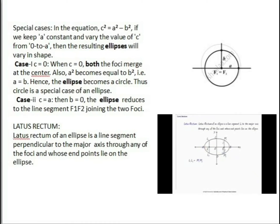The latus rectum of an ellipse is a line segment perpendicular to the major axis through any of the foci whose end points lie on the ellipse. The length of the latus rectum is 2b² / a.